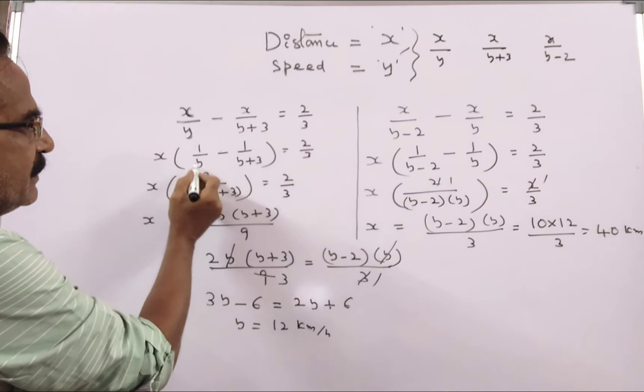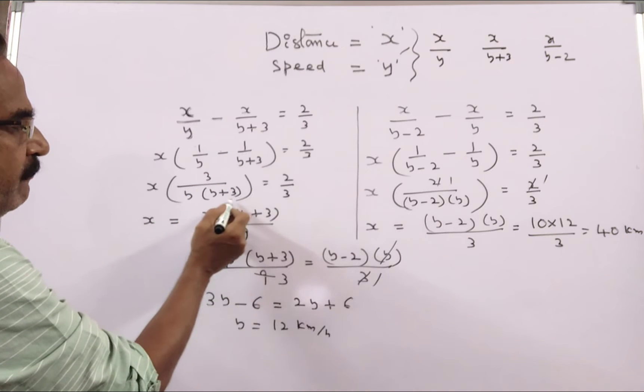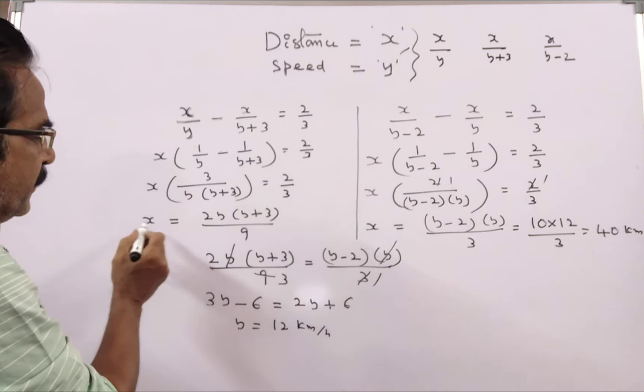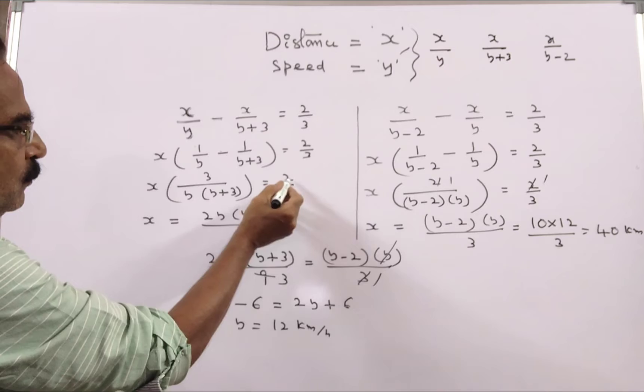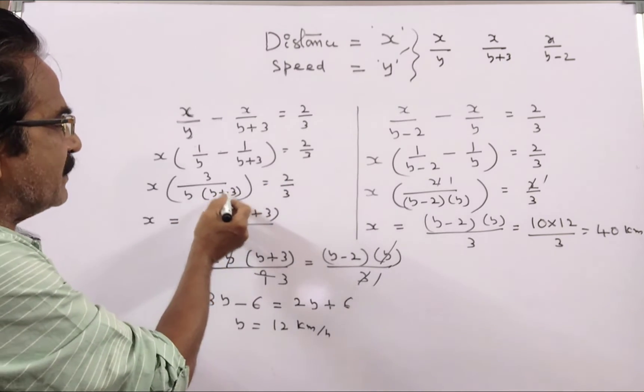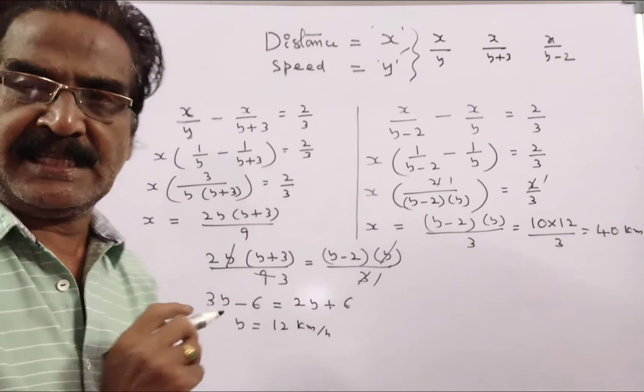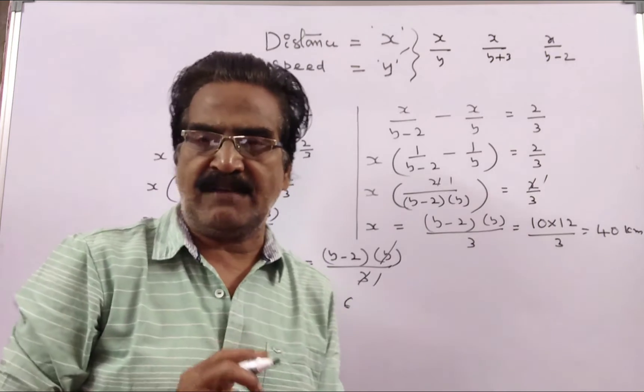x into y plus 3 minus y, 3 by y into y plus 3, 2 by 3. It implies x is equal to 2y into y plus 3 by 9. This is case 1.